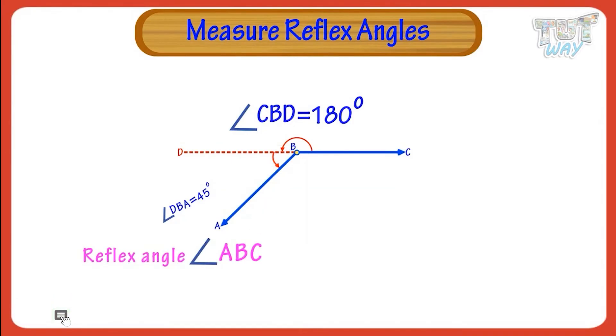The reflex angle ABC is equal to the sum of angle CBD and angle DBA: 180 degrees plus